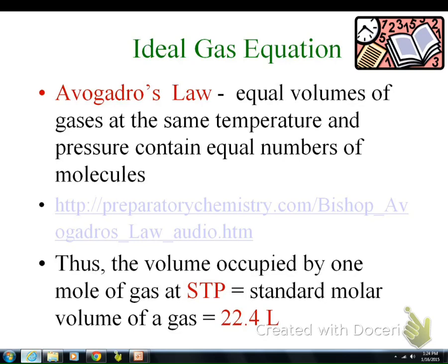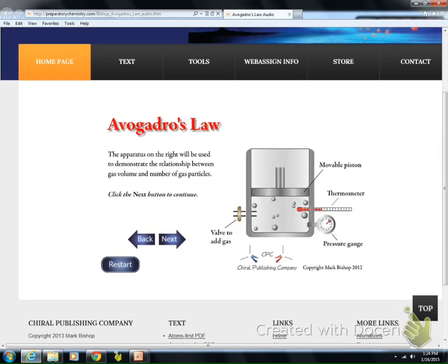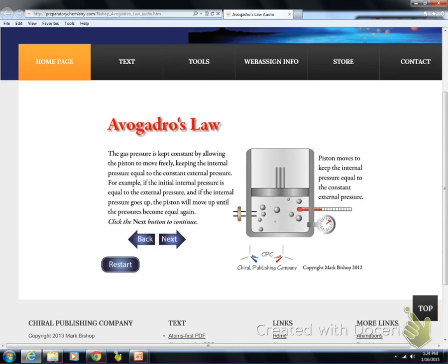Now let's look at the diagrams like we've been looking at with Charles' law, Boyle's law, and Gay-Lussac's law. Here we're looking at our piston. The only thing that's new is that we've added a valve to be able to add gas. The gas pressure is kept constant by allowing the piston to move freely, keeping the internal pressure and external pressure constant.